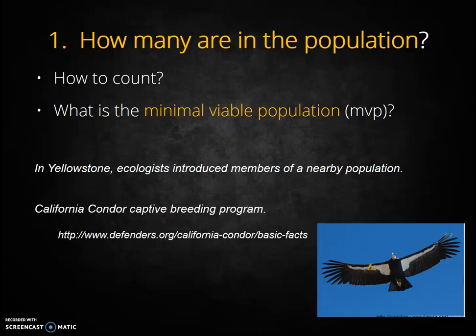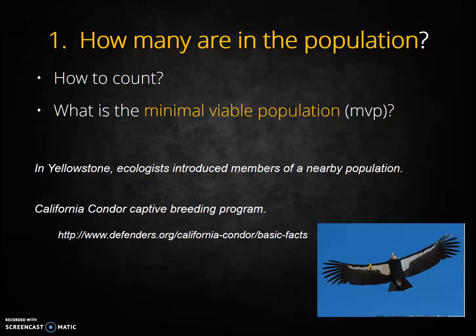Another strategy of last resort is to develop a captive breeding program. The California condor is an excellent example of a population for which a captive breeding program has had some success, and without it the species would likely already be extinct. The population dwindled to just 22 individuals spread out along the central coast of California. This was below the MVP, and the numbers were continuing to drop. With no other feasible alternatives, wildlife managers decided to capture all existing individuals to aid their recovery. There were no other populations — only 22 of these birds existed on planet Earth.